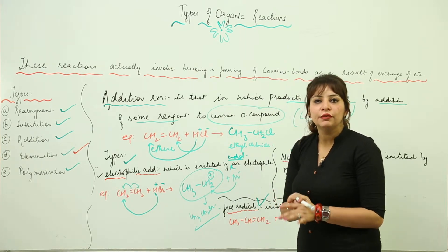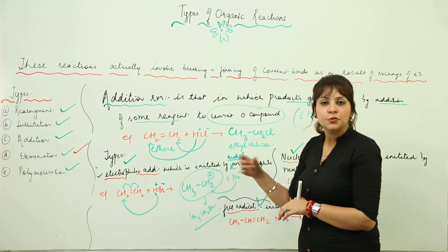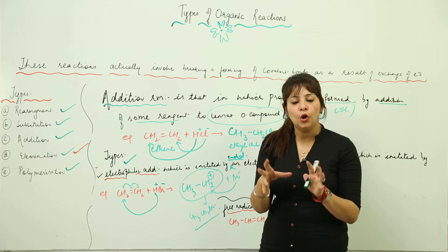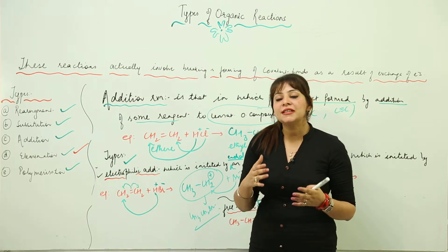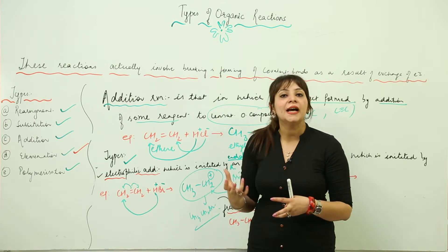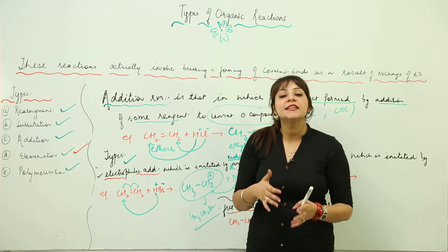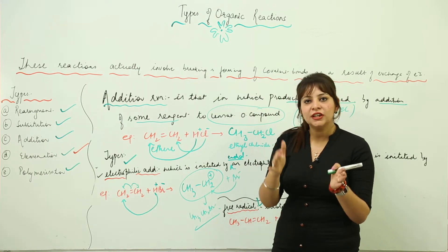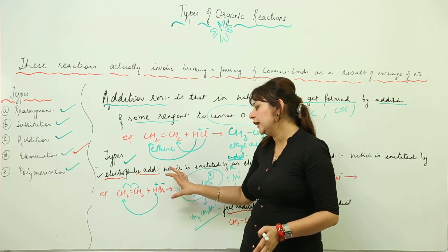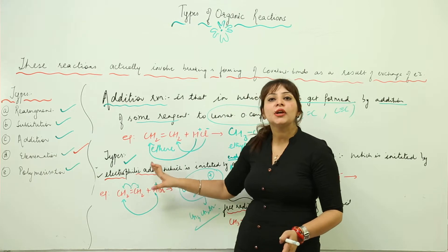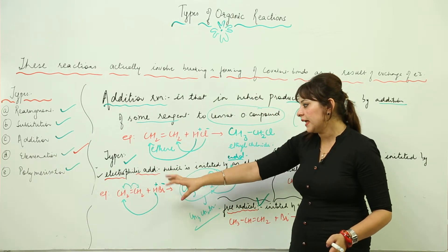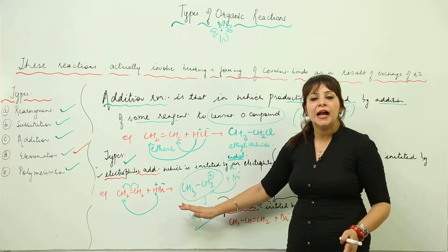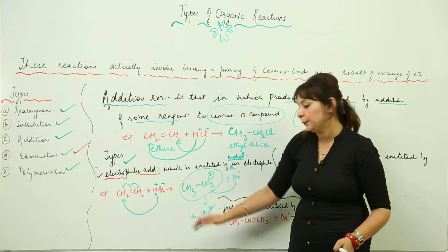For an unsymmetrical alkene, as we discussed in hydrocarbons, we use Markovnikov's rule: the negative part attaches to that carbon across the double bond which carries the lesser number of hydrogens. We also studied that this rule gets reversed when a peroxide like benzoyl peroxide is present — that is the anti-Markovnikov's rule. We won't be discussing those rules in detail here since they are covered in hydrocarbons. The key point is that if initiated by H+, it is strictly electrophilic addition.